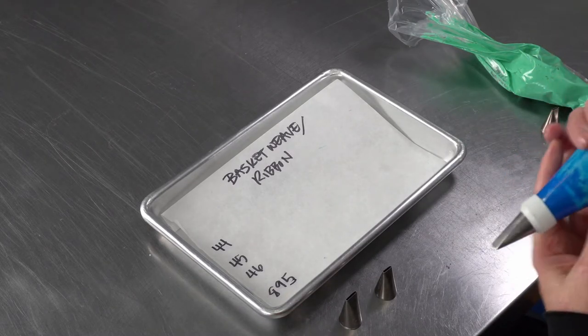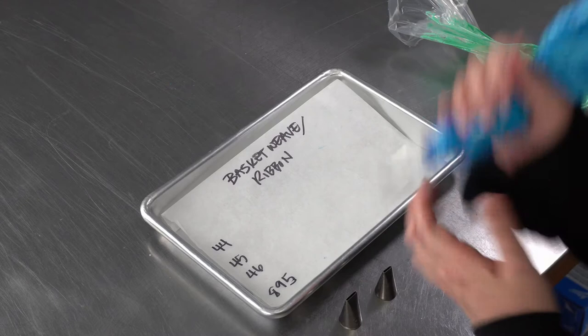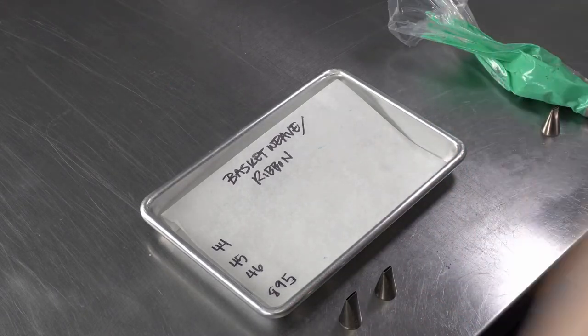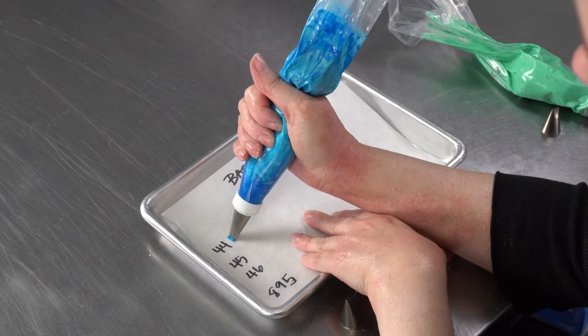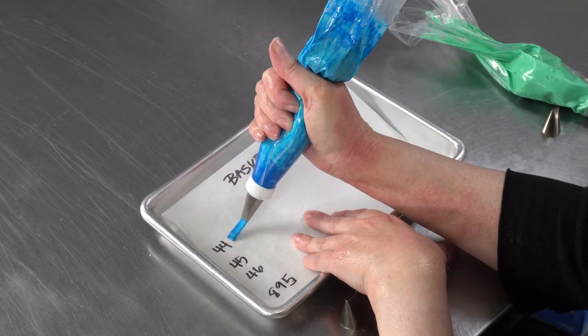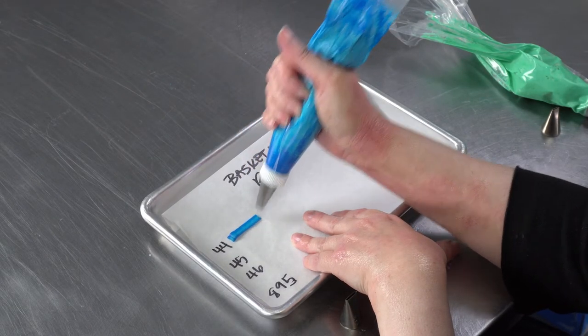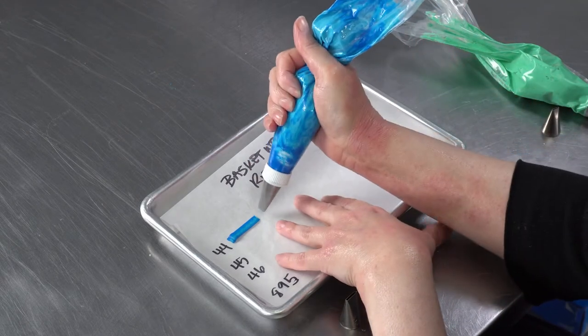We're going to show you what the differences in sizes and the openings look like. A number 44 is a flat line on both sides of the tip.